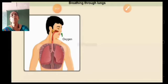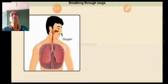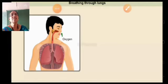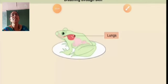Animals breathe through lungs, gills, or air holes. Animals like horses, tigers, monkeys, gorillas, frogs, and even human beings — they breathe through their lungs.